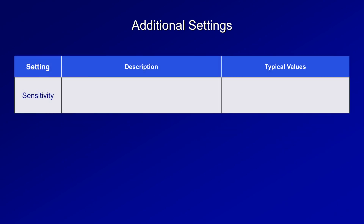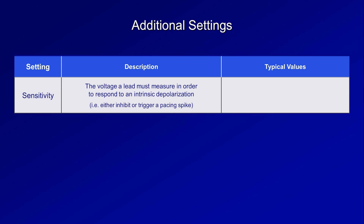In addition to timing cycle settings, there are three additional important settings. First is sensitivity — the voltage a lead must measure in order to respond to an intrinsic depolarization, either inhibiting or triggering a pacing spike. The lower the sensitivity setting, the more sensitive the pacemaker, and vice versa. Sensitivity should have a safety margin of about 2, so if an atrial depolarization has an amplitude of 1.0 mV, the sensitivity should be no higher than 0.5 mV. Typical default settings are 0.5 mV for an atrial lead and 2 mV for a ventricular lead.